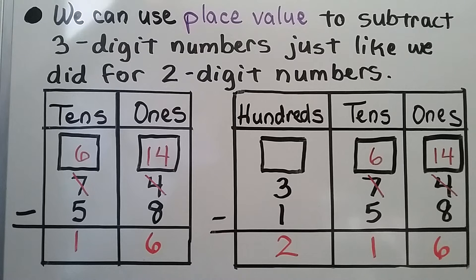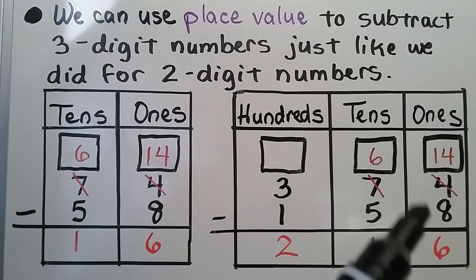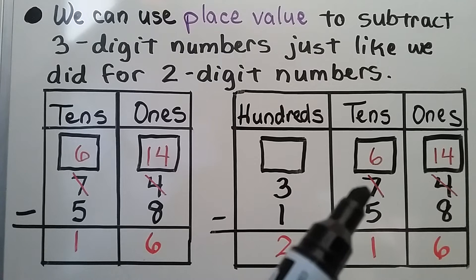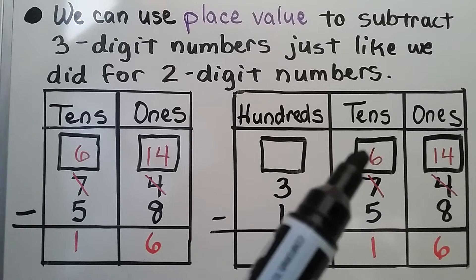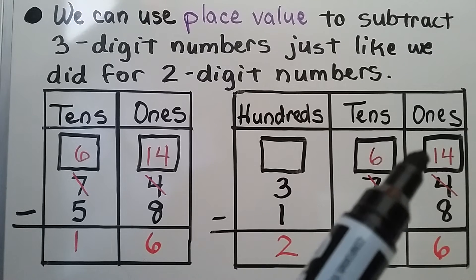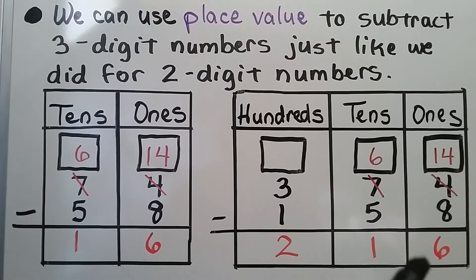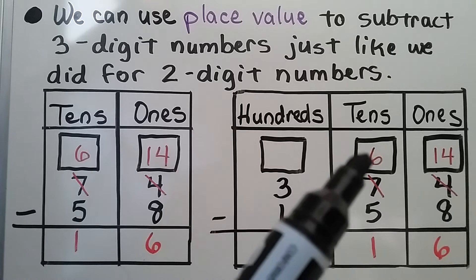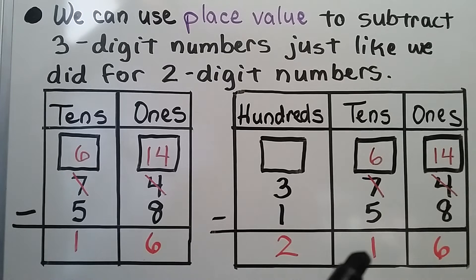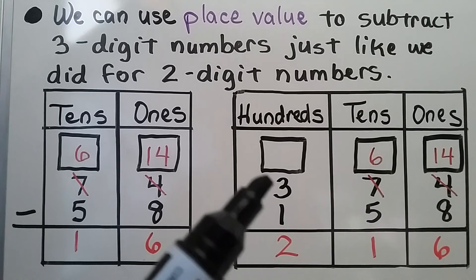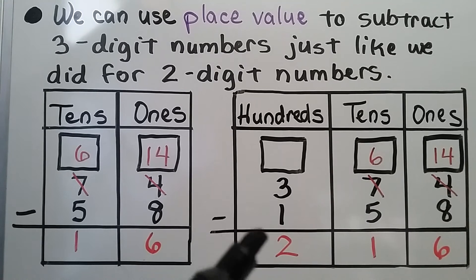We can do it with three-digit numbers. We have 4, which is less than 8, so we need to regroup from the tens place. The 7 becomes a 6. Now we have 14 ones minus 8 ones, which is 6 ones. 6 minus 5 is 1. And we have 3 minus 1, which is 2. So 374 minus 158 is equal to 216.